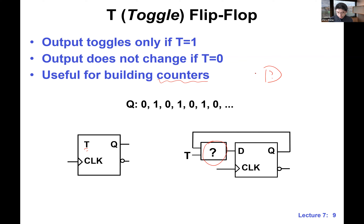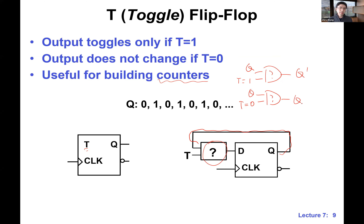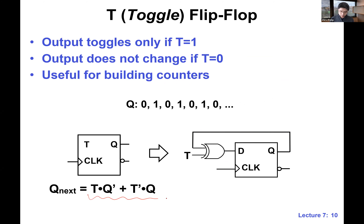So what is this unknown gate? We connect Q back as one input and T as the other. When T is one and input is Q, the output is Q-not — it flips. When T is zero, the output stays the same Q — it holds. This behavior is exactly XOR — exclusive OR. The Boolean expression is D = T XOR Q. All we need to do is add an XOR gate right in front of D and connect one of its inputs to Q. That's the toggle flip-flop.